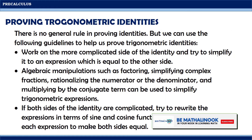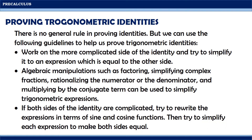There is no general rule in proving identities, but we can use the following guidelines. First, work on the more complicated side of the identity and try to simplify it to an expression equal to the other side. Next, algebraic manipulations such as factoring, simplifying complex fractions, rationalizing the numerator or denominator, and multiplying by the conjugate term can be used to simplify trigonometric expressions.